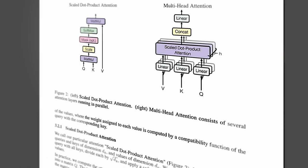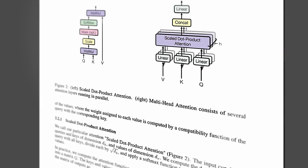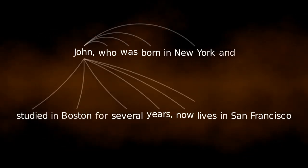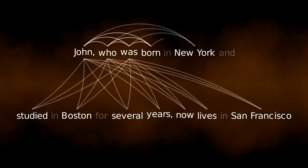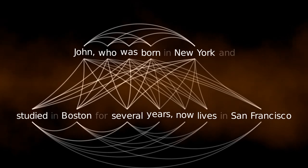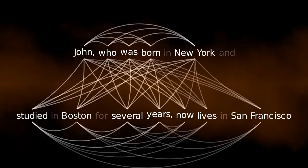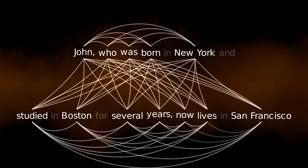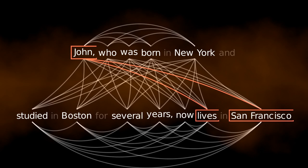Before self-attention, that's how AI processed input too — sequentially. But nowadays, a typical large language model will process this information in parallel with a multi-head attention mechanism. To give a high-level overview, this effectively means it calculates vectors that relate each word to every other word in the sentence, so it can know that John and San Francisco are highly related.